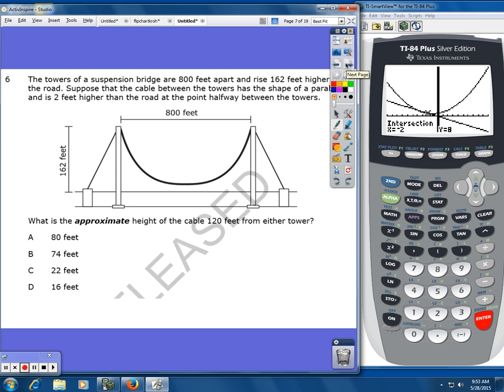Next question. The towers of a suspension bridge are 800 feet apart and rise 162 feet higher than the road. Suppose that the cable between the towers has the shape of a parabola and is 2 feet higher than the road at the point halfway. So that means this distance right here is 2 feet.